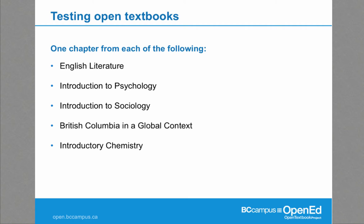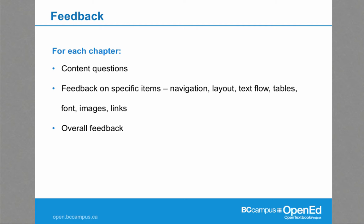For example: English literature with poetry and footnotes; Introduction to Psychology with issues around tables and images; Introduction to Sociology with quizzes; BC in a Global Context with charts, maps, and an embedded Google map; and introductory chemistry with images and equations. We took chapters from books we had created or adapted. We gave students the following instructions: read one chapter from five different textbooks using the software and hardware you would normally use.